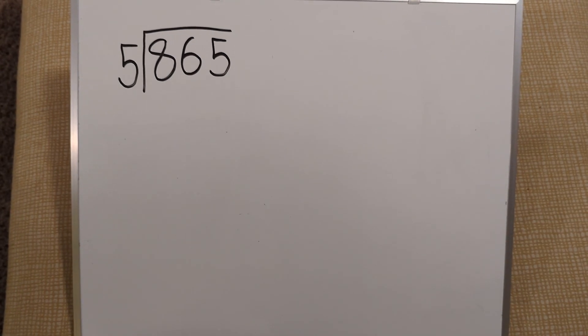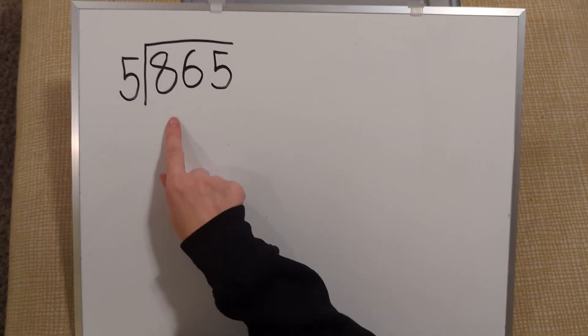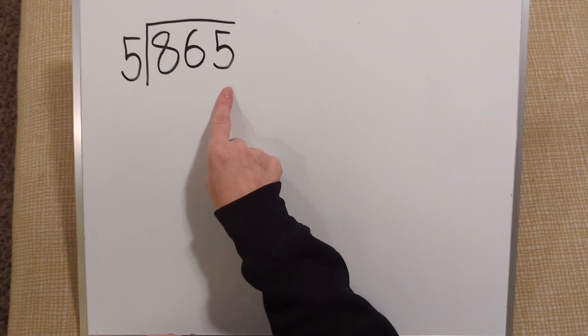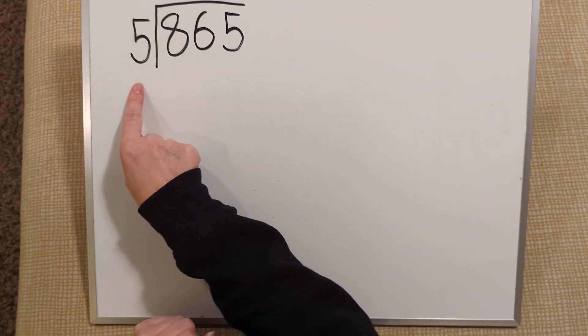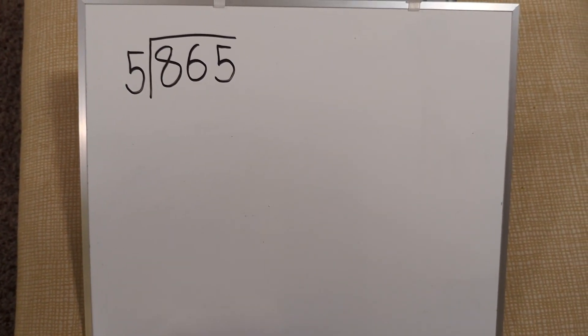I need to solve 865 divided by 5. My dividend of 865 is a pretty big number and I'm not sure how many times my divisor of 5 can go into that. So I want to use the partial quotient strategy to help me solve this problem.